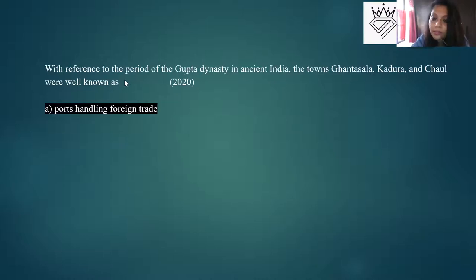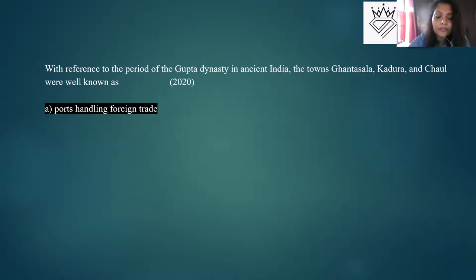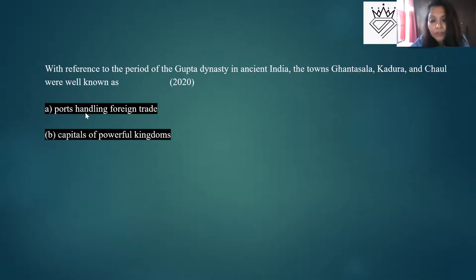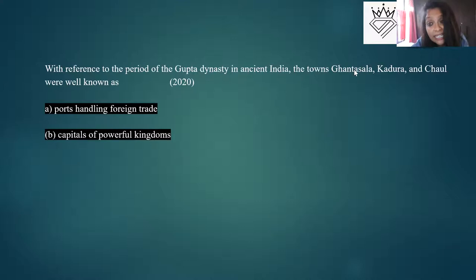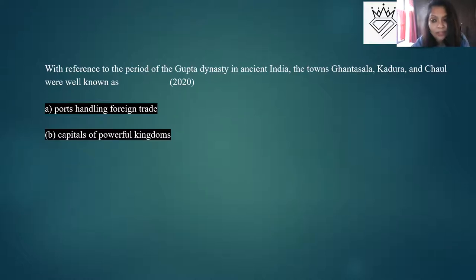For individual ports like Ghantasala, if it's not known to you, check if you've read it elsewhere — maybe as a capital of a kingdom. Don't just stick to one word; if you have a remote idea, check if there's any analogy with the next option. Chola trade and Gupta trade were significant; those ports are the priority. Dynasties ruling coastal areas had important ports — make a list.